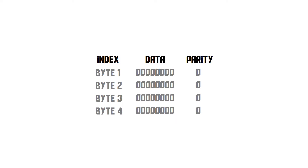Parity memory takes every byte in the memory and adds one extra bit of information called the parity bit. When we load the lowercase 'a' into memory, you can see it has three 1s in it, and 3 is an odd number, so the parity bit will be 1. If we load the letter 'c', which has four 1s — an even number — the parity bit would be 0. The parity bit tells you whether the number of 1s in the data is even or odd.